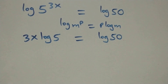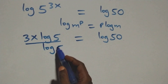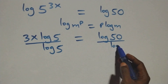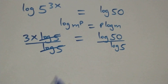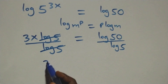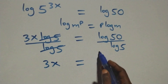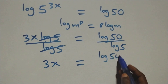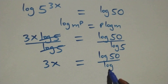At the next step, we divide both sides by log 5. Dividing both sides by log 5, the log 5 terms cancel each other, and we have 3x equals log 50 over log 5.